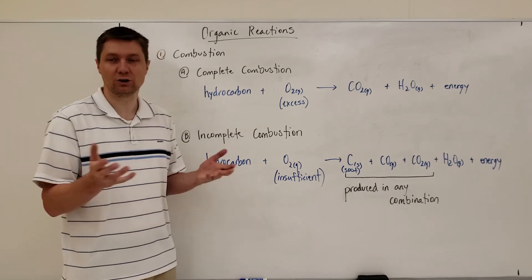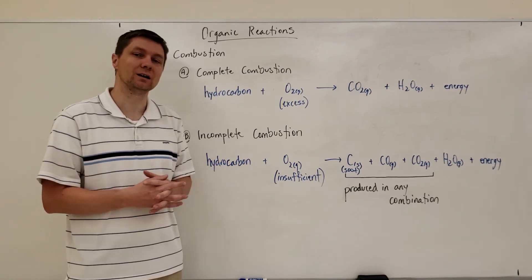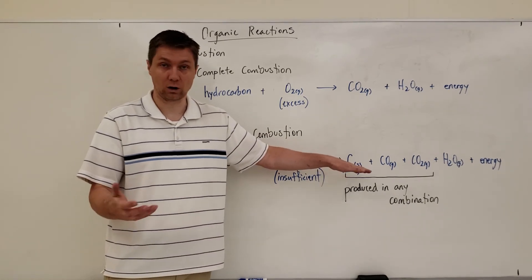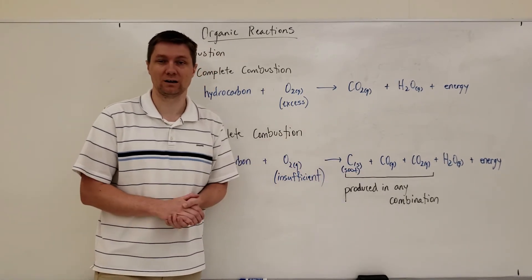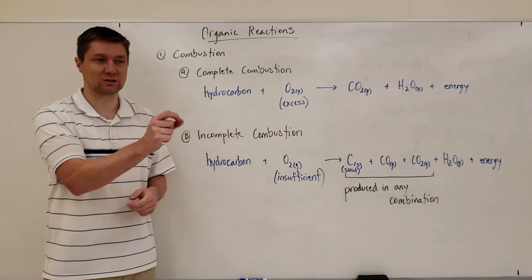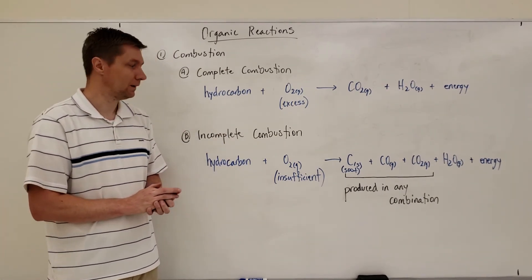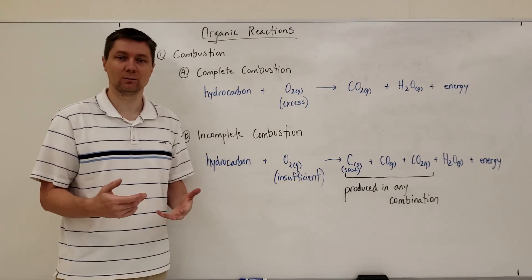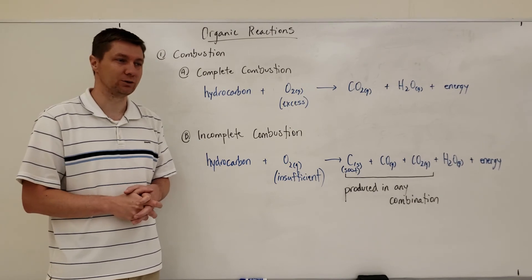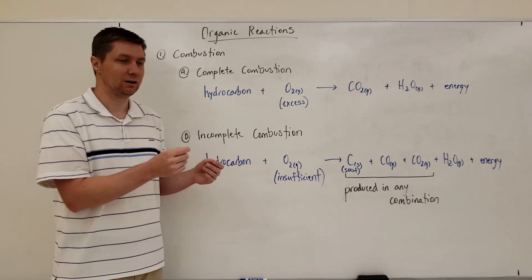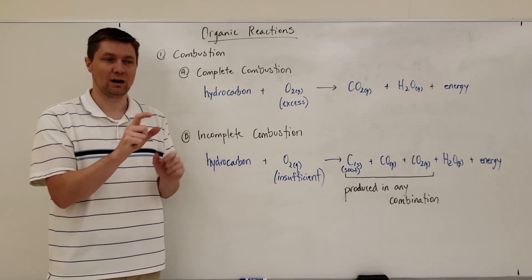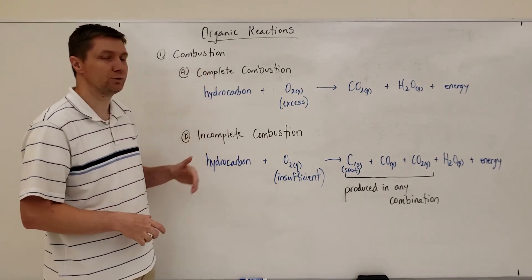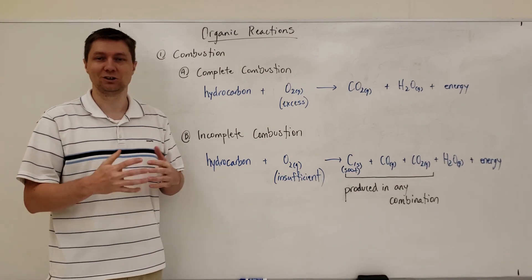But that's what you're looking for, is you're trying to identify an incomplete combustion. Is it producing soot and or is it producing carbon monoxide? And if it is, then you can just quickly identify that's an incomplete combustion. You won't be asked to predict the products of an incomplete combustion because there would be no really way for you to do that. But you should be able to identify, given a chemical reaction, that's an incomplete combustion. So here's sort of the combustion templates for both complete and incomplete, and that's what you need to know.